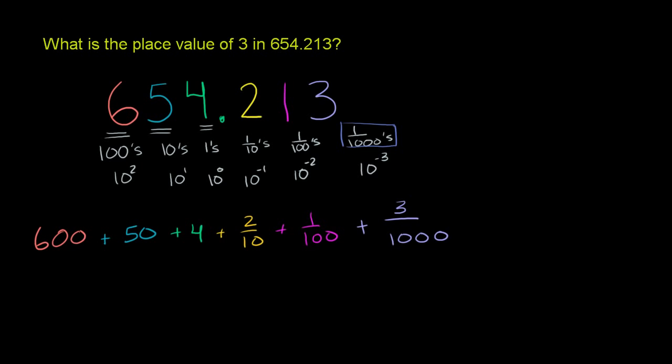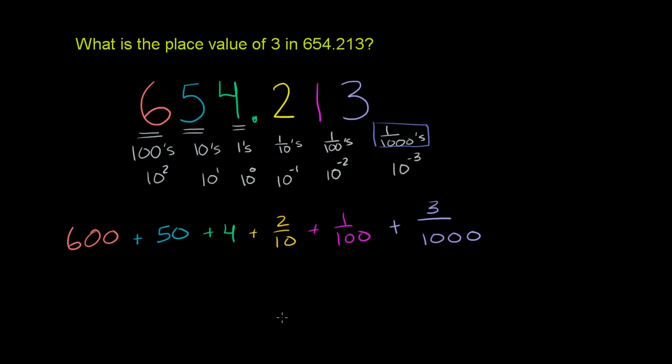Or we could write this, just to really make sure we understand what we're talking about when we mean place value. We can rewrite this number as 6 times 100, plus 5 times 10, plus 4 times 1.